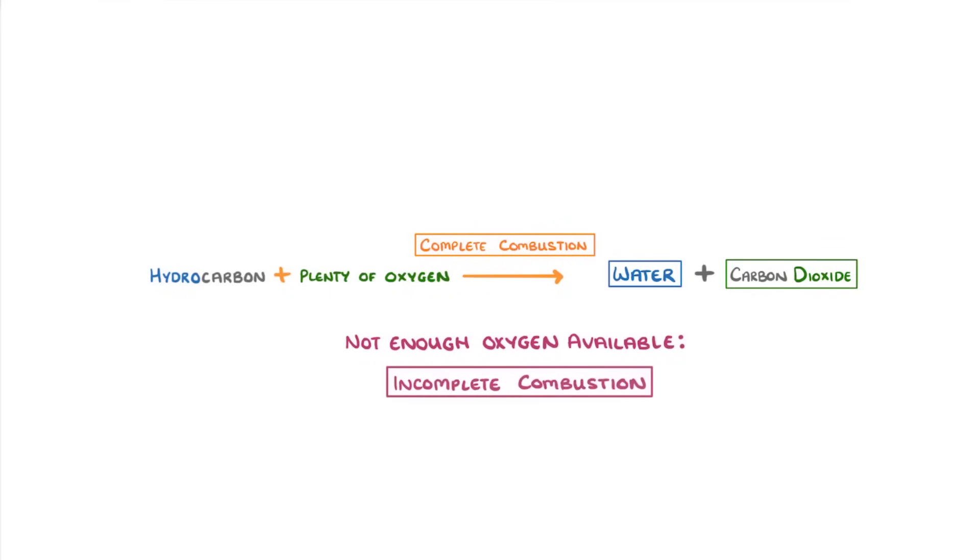Whenever a hydrocarbon burns in plenty of oxygen, and so burns completely, we call the process complete combustion, and the only products we should get are water and carbon dioxide. However, when there's not enough oxygen available, we instead get incomplete combustion, which can release carbon monoxide and particulates, which are solid particles of carbon that we call soot.